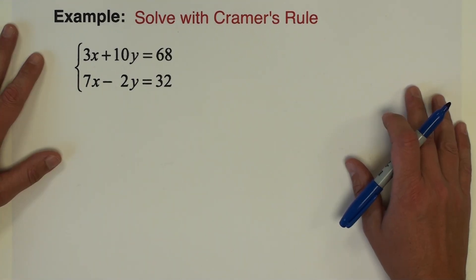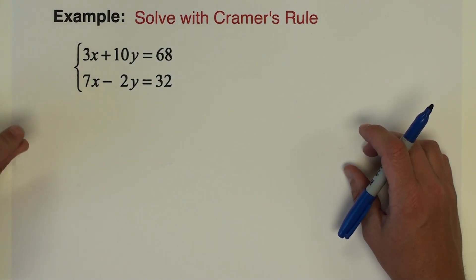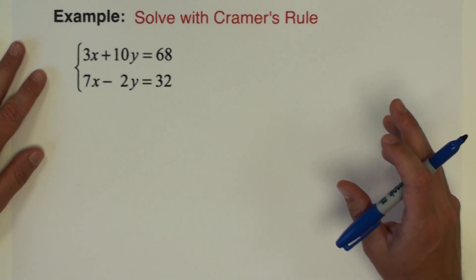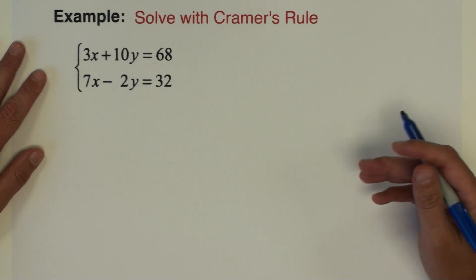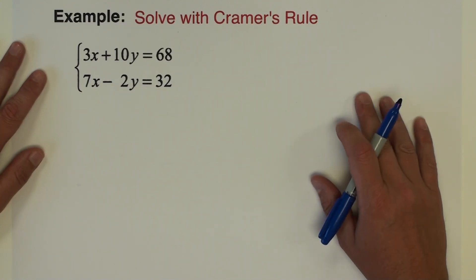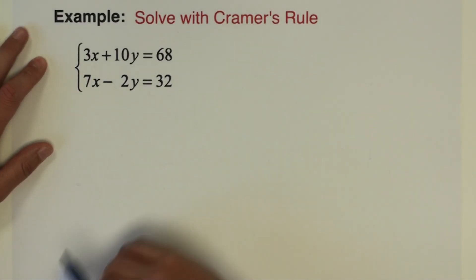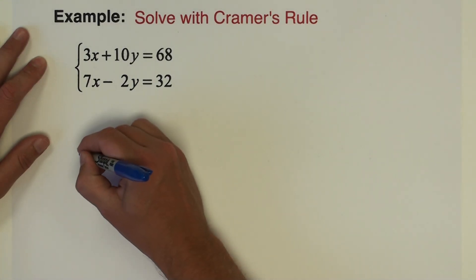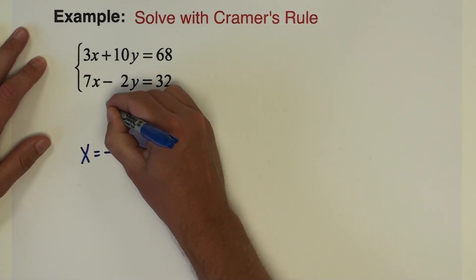I've got one more 2 by 2 system of equations to show in this video. If you think that one example was enough to give you the rundown, you might want to pause the video right here and see if you can set it up and solve it on your own. Once you're ready to check your answers, push play and fast-forward to the answer part. Otherwise, sit back and watch me work through another example.